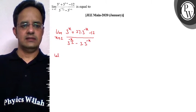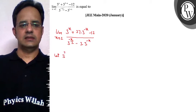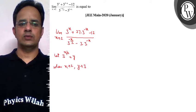Now to solve this limit, we make an assumption that let 3 raised to power x by 2 is equal to y. So when x tends to 2, y tends to 3. If x value is 2, it is 3 raised to power 1, means y tends to 3.